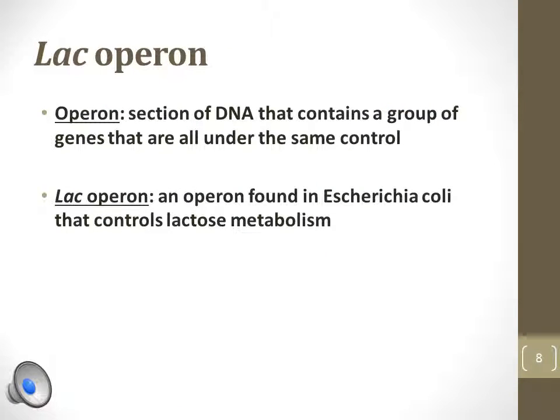An operon is a section of DNA that contains a group of genes that are under the control of the same promoter region upstream. One example of an operon is the lac operon found in Escherichia coli bacterium, which regulates genes for the metabolism of the carbohydrate lactose.